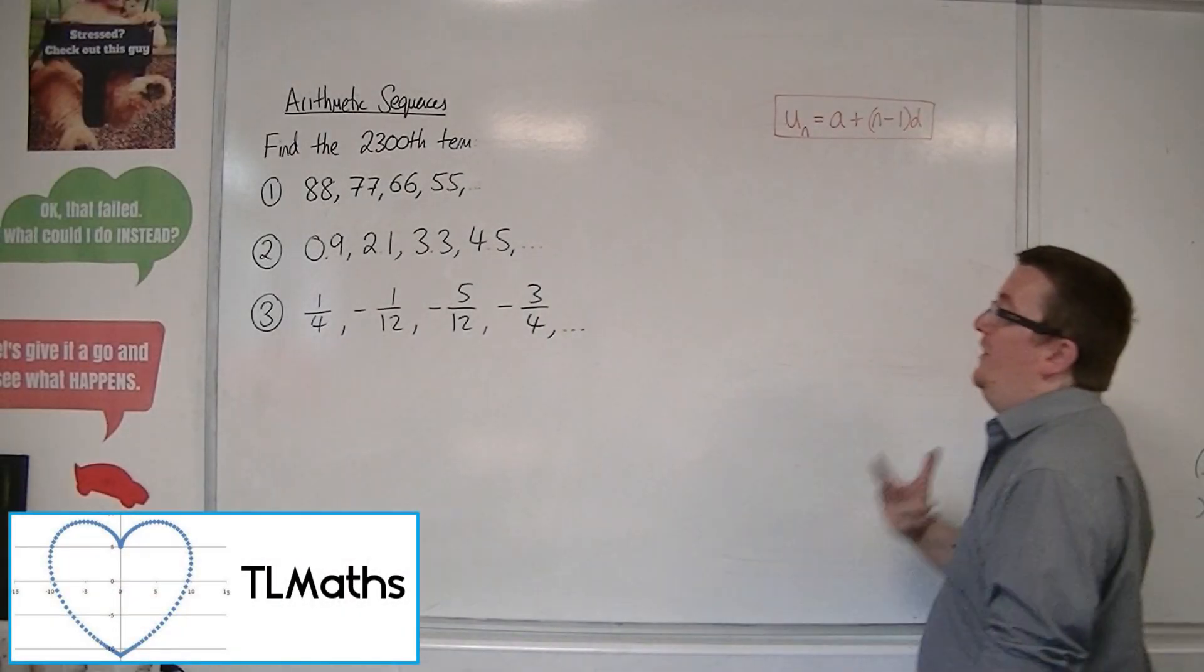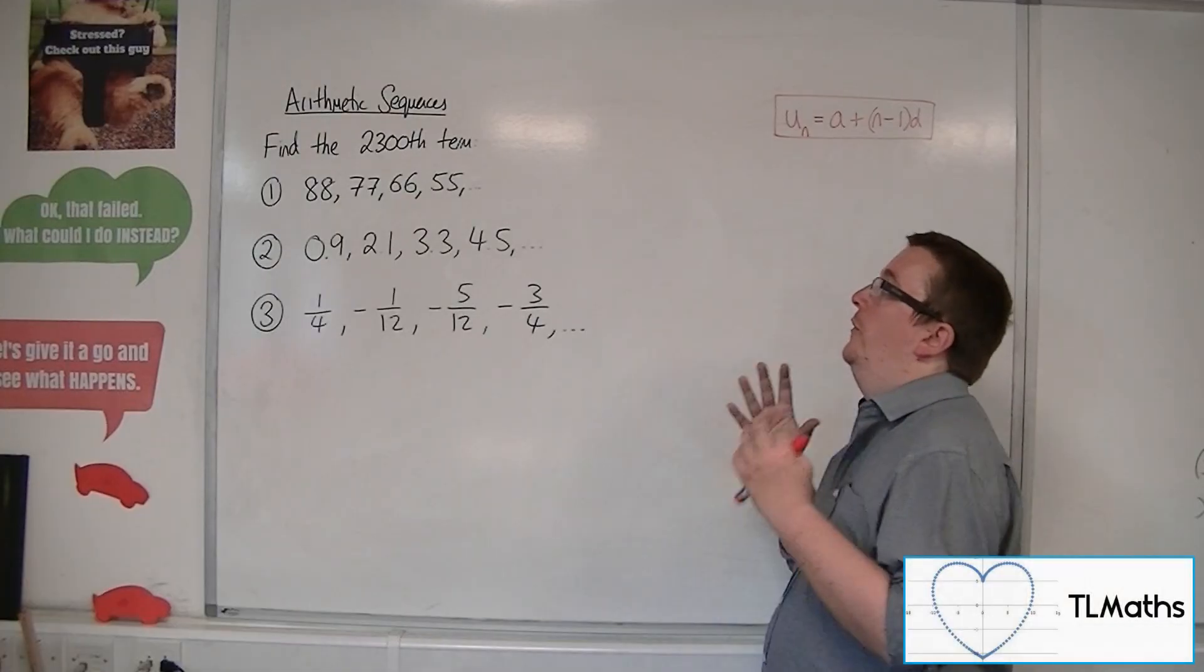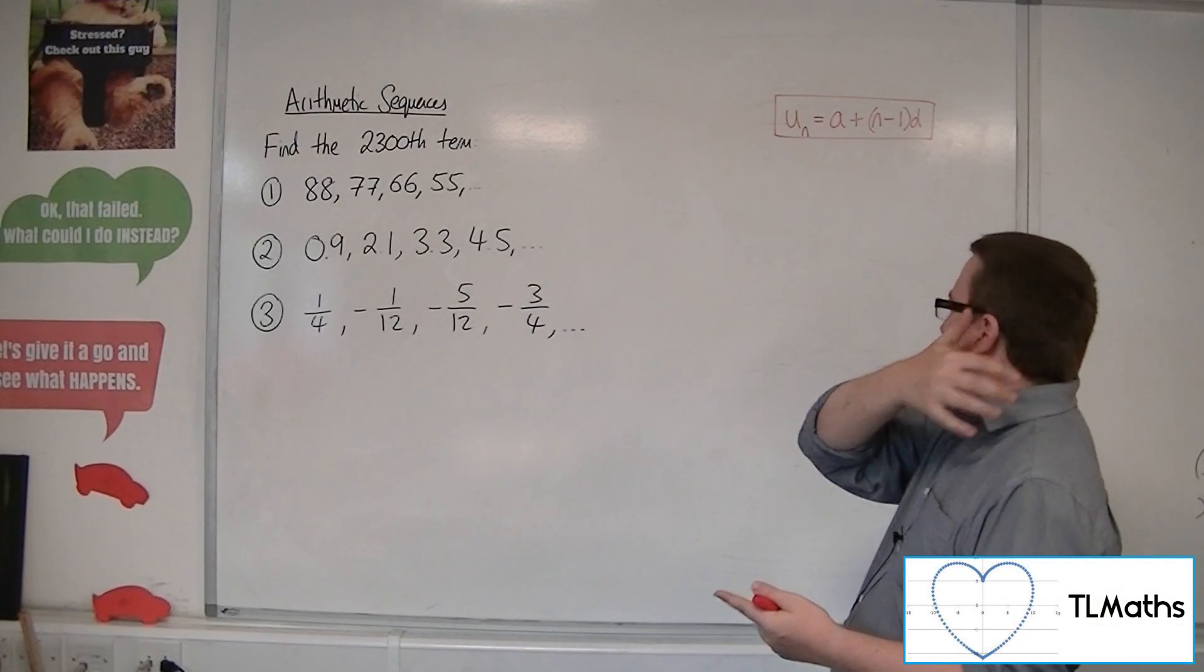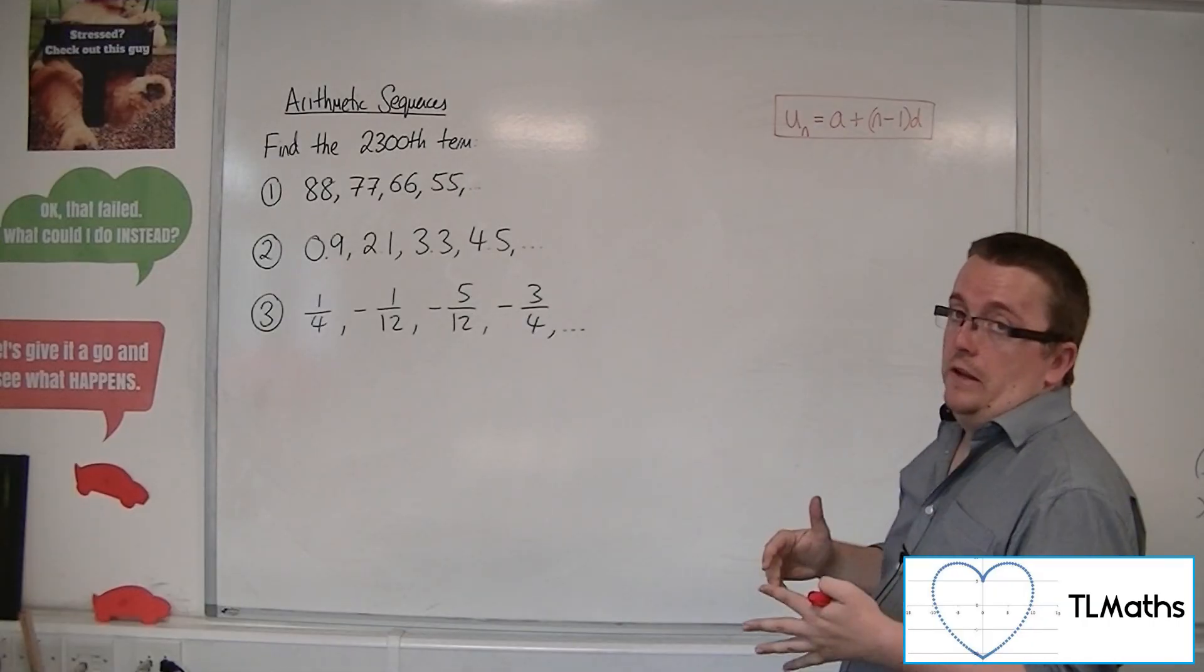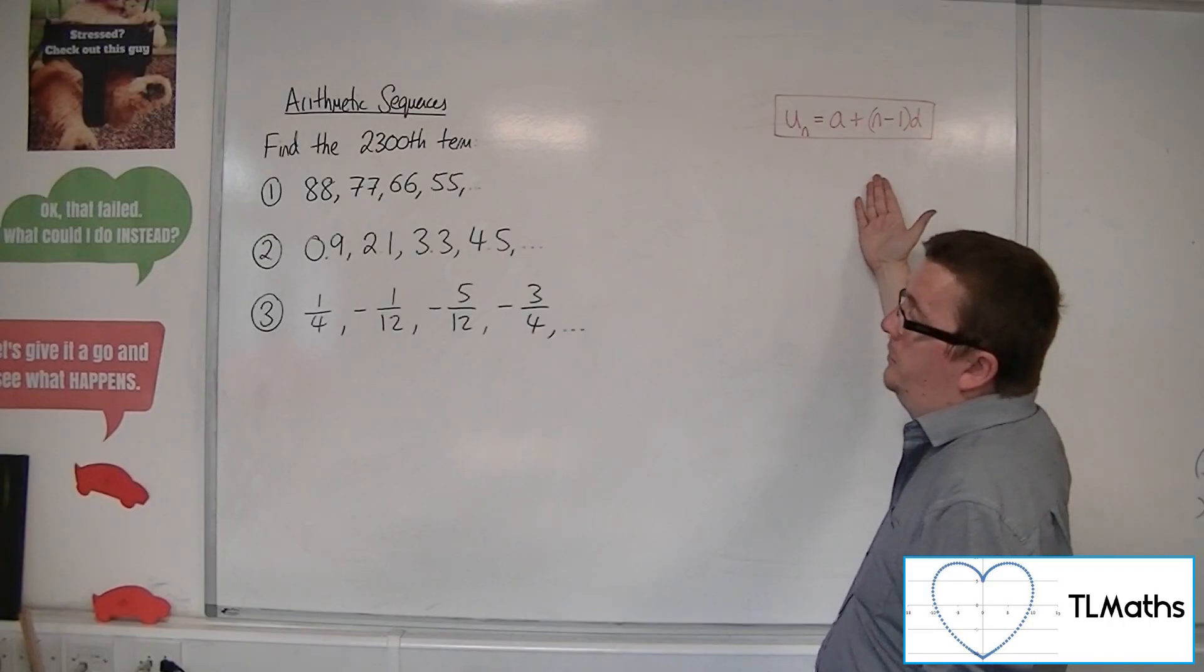OK, so in each of these three examples, what we want to do is find the 2300th term. So in each of these cases, I'm going to have to find the nth term first. I'm going to use this arithmetic sequences formula in order to do it.